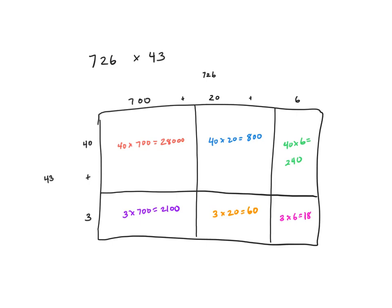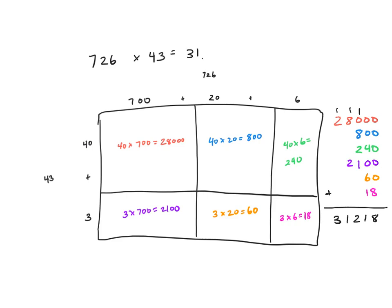Taking all of our partial products: we have 28,000, we have 800, we have 240, we have 2,100, we have 60, and lastly we have 18. When we add all of these up, we get the product of 726 times 43, which is 31,218.